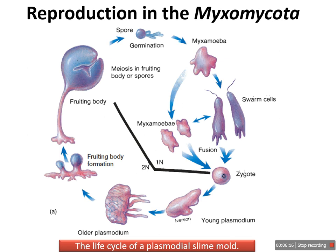When free water is available, myxamoeba can differentiate into flagellated swarm cells. Although two flagella are present, the anteriorly directed flagellum is prominent while the second very short flagellum is usually not visible. During periods of unfavorable conditions, the protoplast of the myxamoeba or swarm cells can round up and form a thin cellulose protective layer around itself called the microcyst, which protects it from the unfavorable surrounding environment.